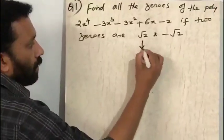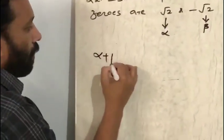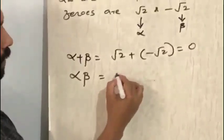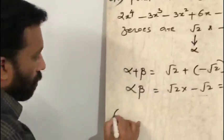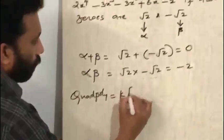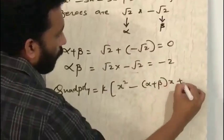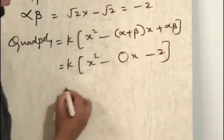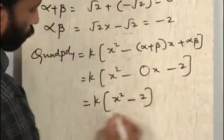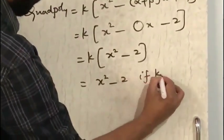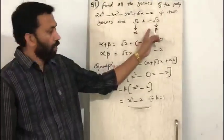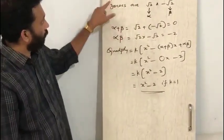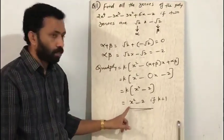Take alpha equal to √2 and beta equal to −√2. Alpha plus beta equals √2 + (−√2), so the sum is 0. Alpha beta equals √2 into (−√2), that is −2. The quadratic polynomial is k into x squared minus 0 times x plus (−2), giving k into x squared minus 2, which is x squared minus 2 when k equals 1. Now we divide the given biquadratic polynomial by this quadratic polynomial x squared minus 2.